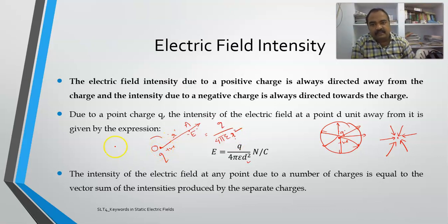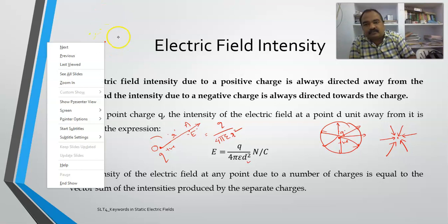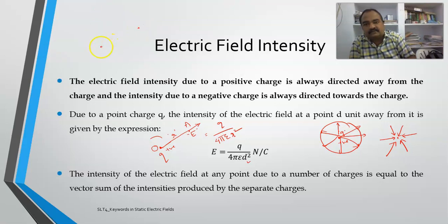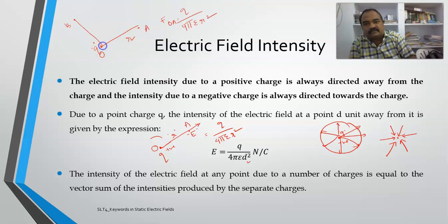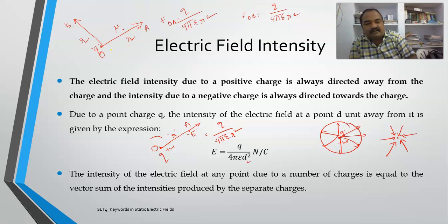Let us suppose there is a charge Q at point O. At point A and also at point B, both at a distance R, the magnitude of the field is Q/(4πε₀R²) in both cases. The difference between the field at A and B is only the direction. That difference is represented by the unit vector. So in general, E (vector) = Q / (4πε₀d²) multiplied by the unit vector aR, where aR represents the unit vector.